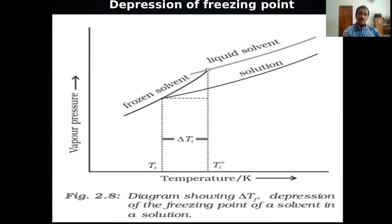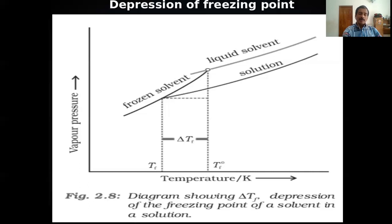In the case of a solution, vapor pressure is less than that of the pure solvent. The vapor pressure curve of the solution meets the vapor pressure curve of the pure solid solvent at a lower temperature, represented as T_f. The freezing point of the pure solvent is T⁰_f, and the difference ΔT_f represents the depression of freezing point. The freezing point of the solution is always less than that of the solvent.